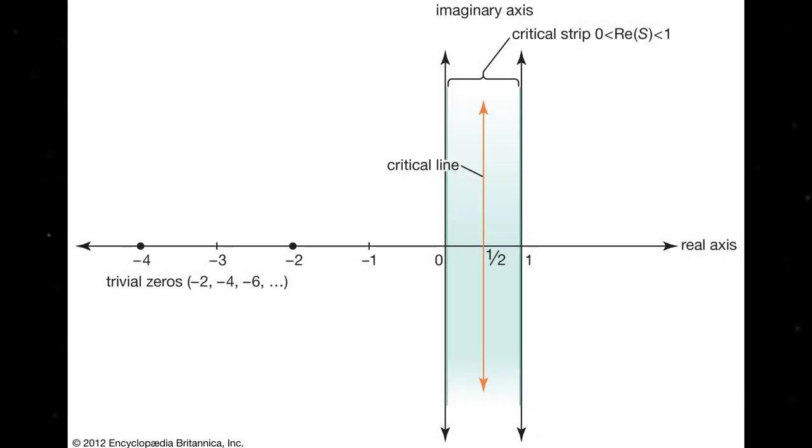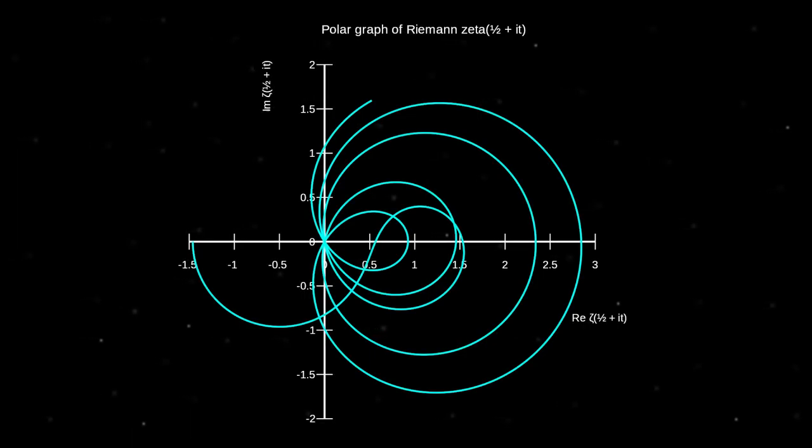Riemann showed that all non-trivial zeros lie between the real components of s equals 0 and s equals 1. He hypothesized that all non-trivial zeros lie bang on in between a real component of s equals half, and if proven true, would be one of the greatest achievements in modern mathematics.